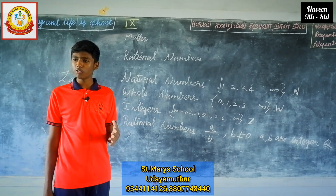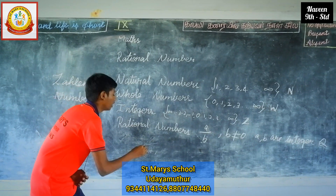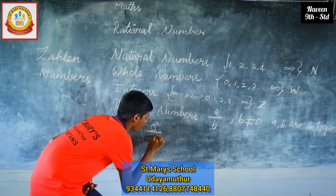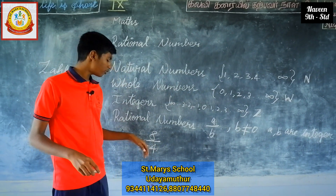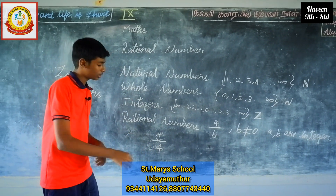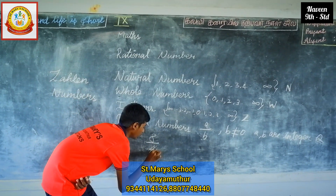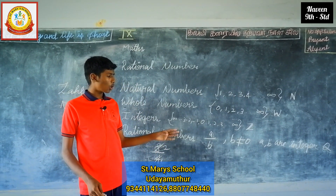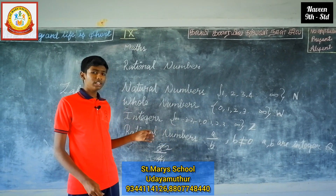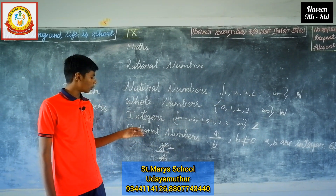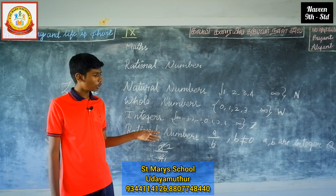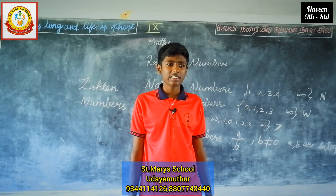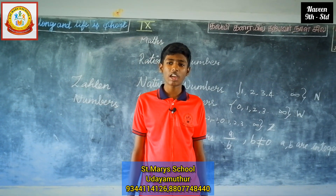I'll give one example: 8 by 4. When you simplify these factors, we get 2. The 2 here is the quotient. So rational numbers are denoted by Q. Thank you for listening to this class. Have a valuable day.